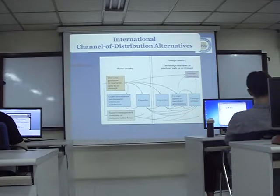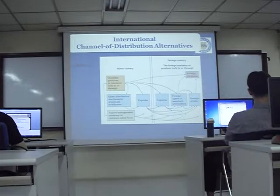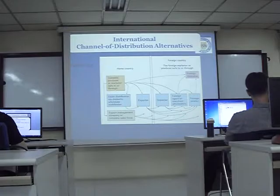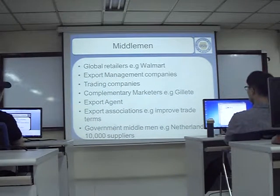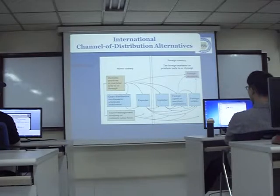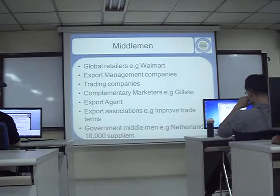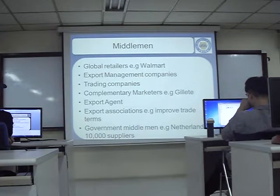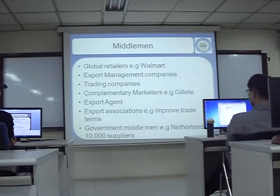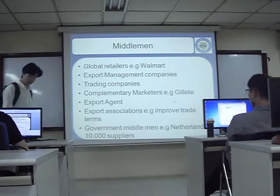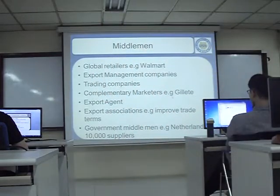All of you have your own companies and you're all exporting to China, so you share experience, networks, contacts, and advice about distribution. Then if someone goes to Spain, they can help the others. We also have government middlemen — we have to think about the government as an important customer. For example, the Netherlands government has 10,000 different suppliers. If you're producing boots and want to sell boots to the Netherlands army, that's a big contract. Governments also spend on a lot of things.